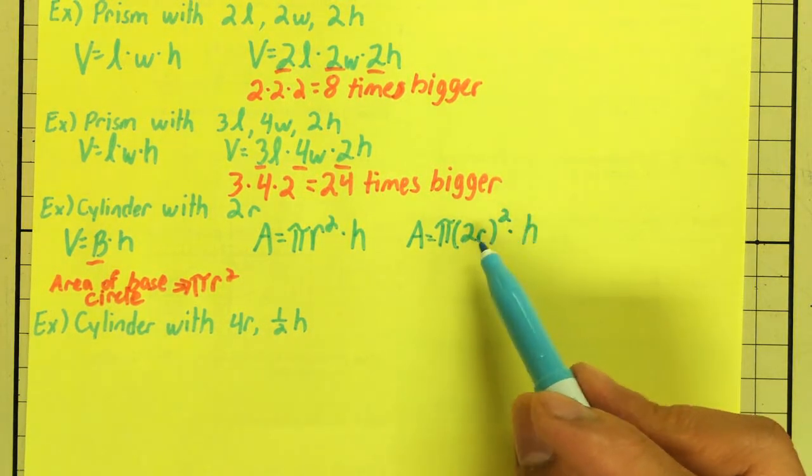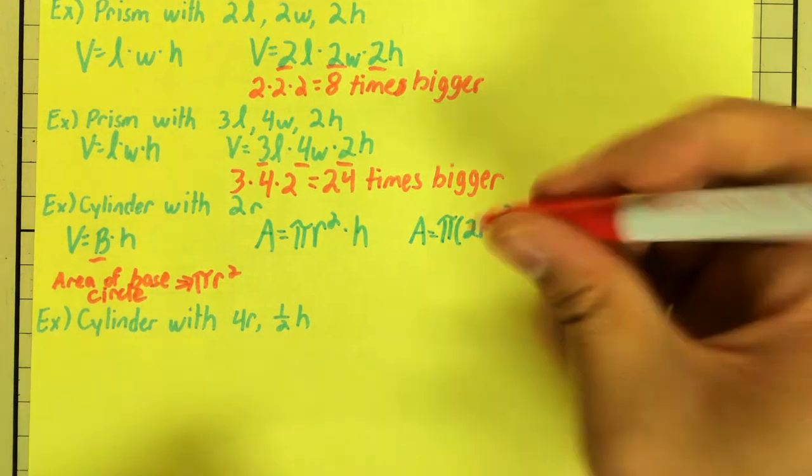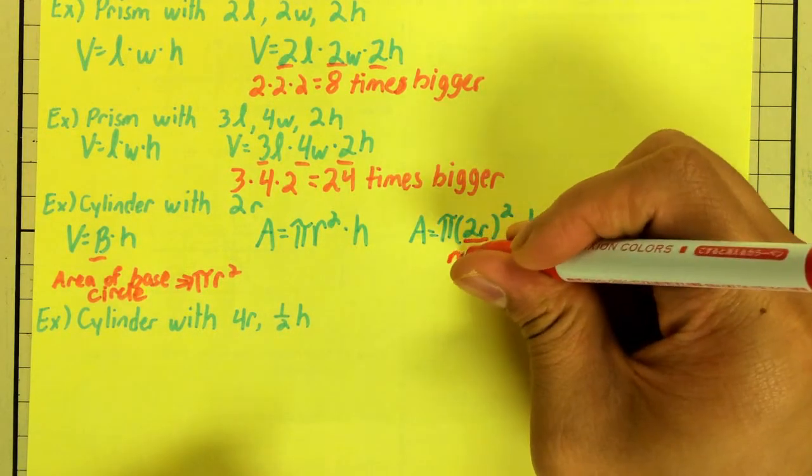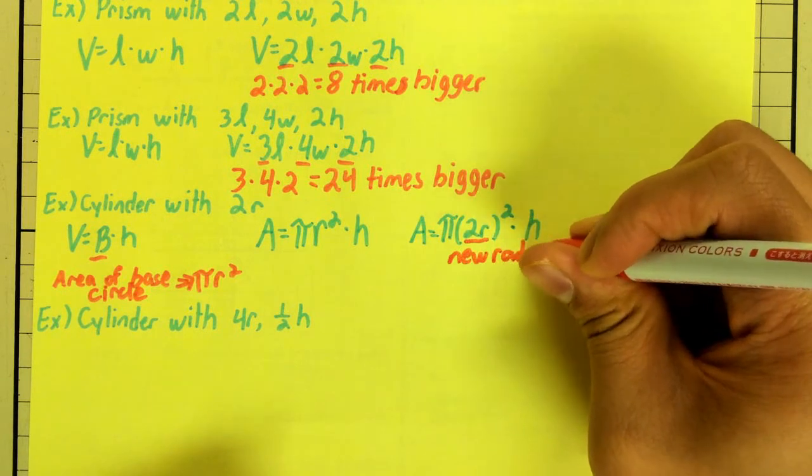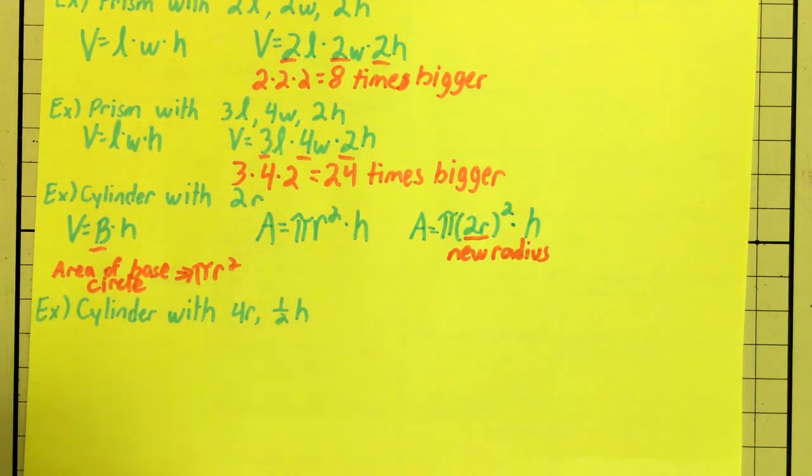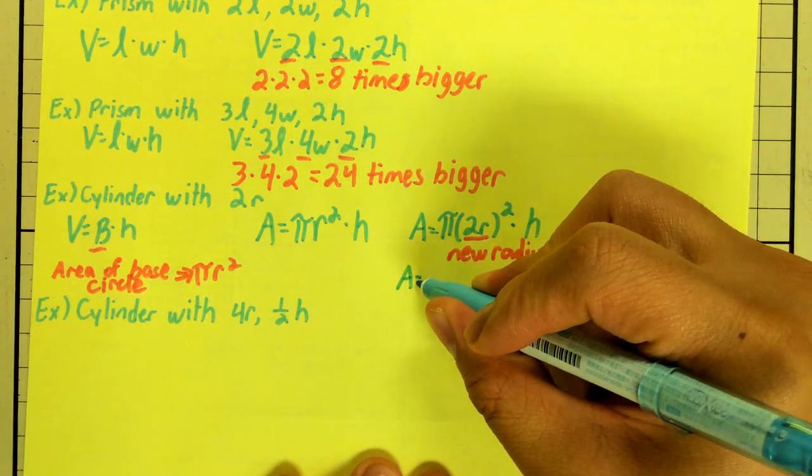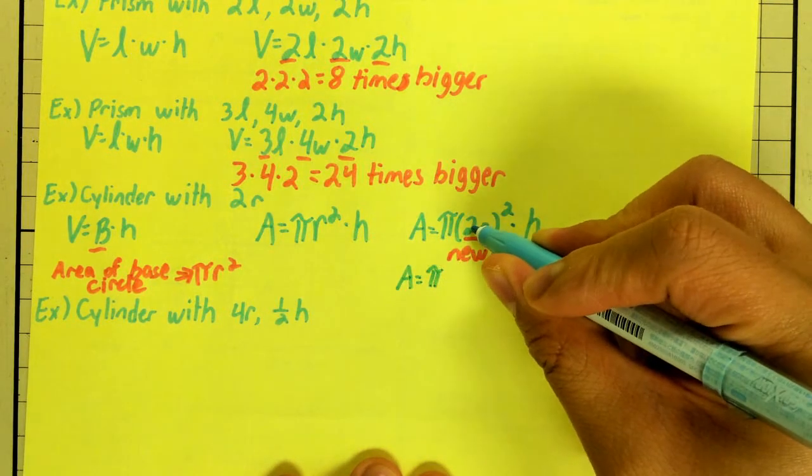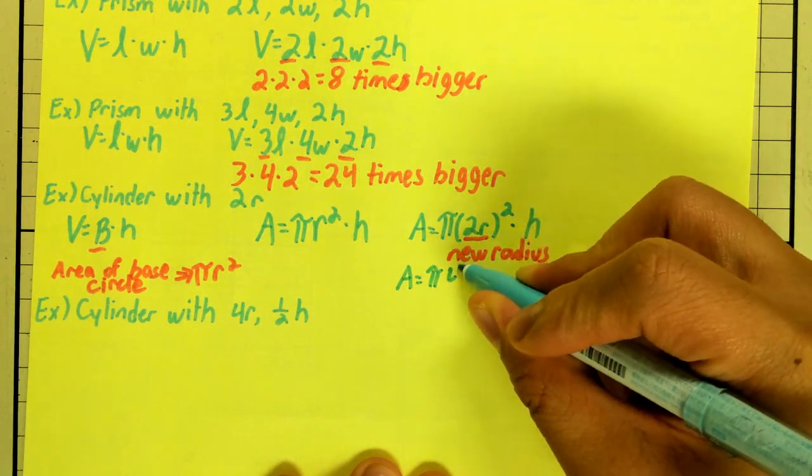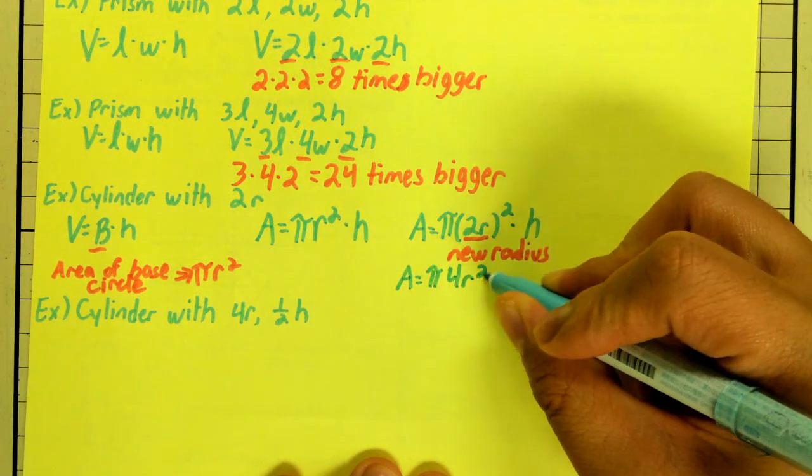This thing, the underlying right here, is your new radius. Now, 2r squared is something we can do. 2r squared gets me area equals pi. 2 squared is 4. Then r squared times h.